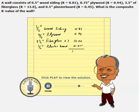So when you add these up, you get 15.2, which means the composite R value of this wall is 15.2 degrees Fahrenheit foot square hour over BTUs.